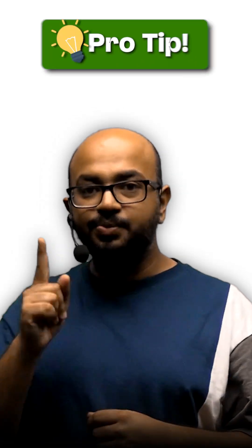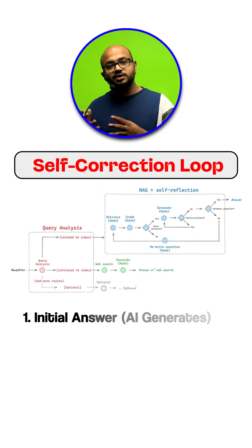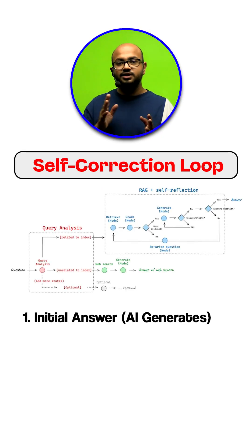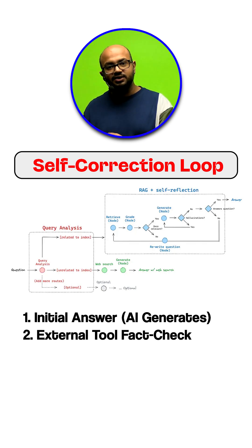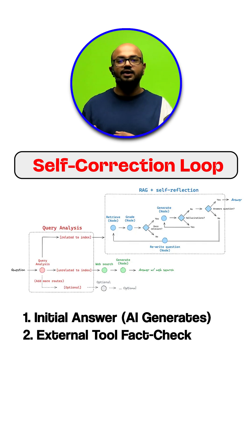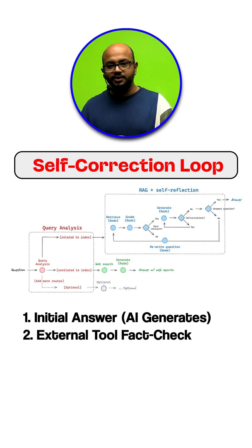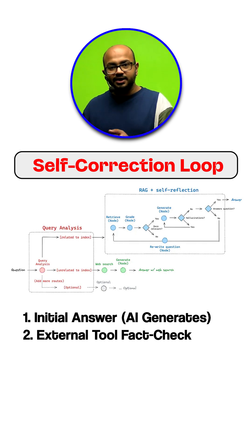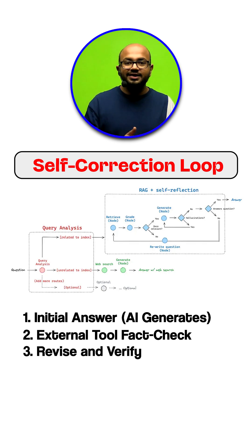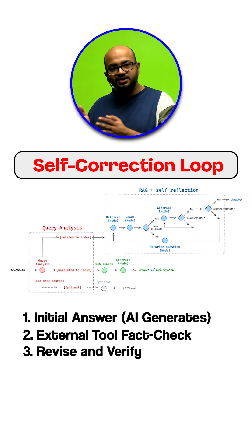Here's the pro tip: mention a self-correction loop. This is where the model generates an initial answer, then uses an external tool like a web search or a code interpreter to fact-check its own claims, and then revises the answer based on the verified results.